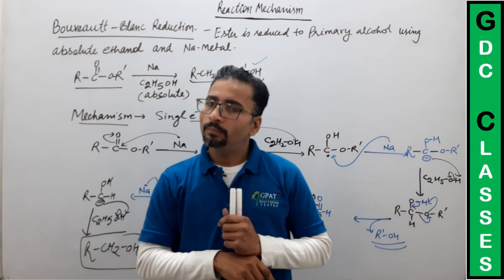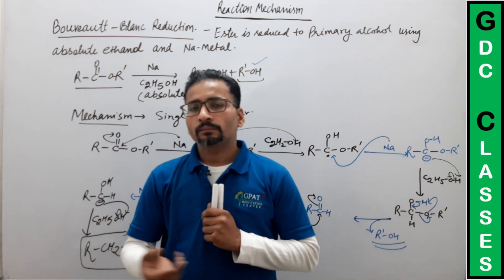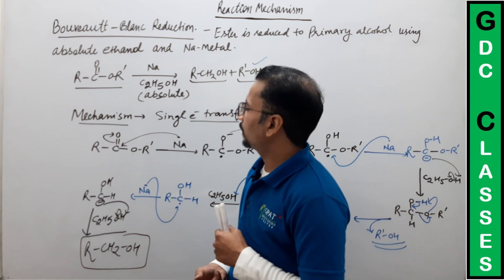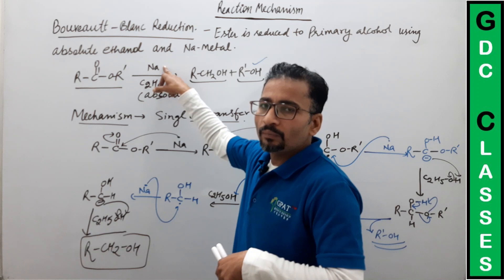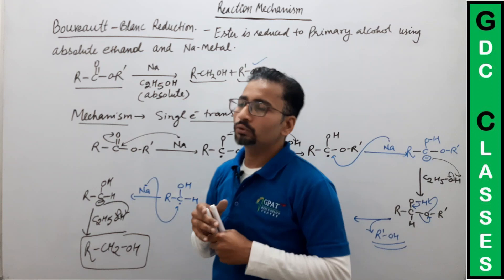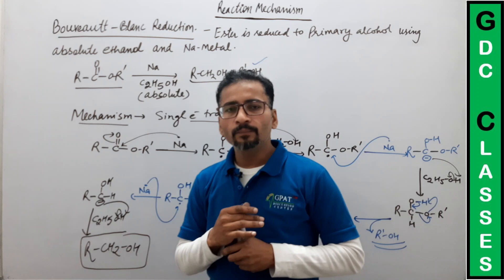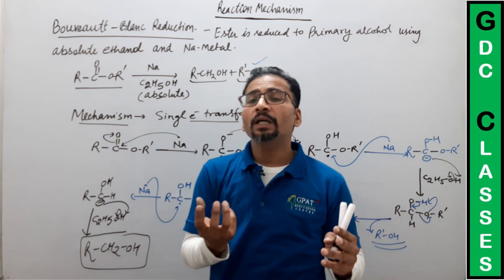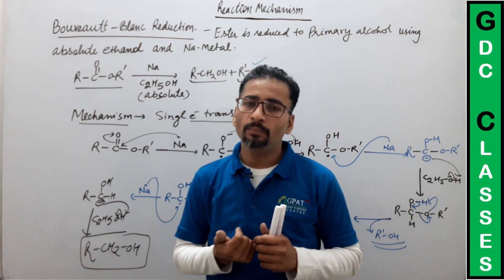Application part में: Bouveault-Blanc reduction का newer version यह है कि sodium को silica gel के साथ लिया जाता है, जिससे reaction थोड़ी fast हो जाती है और safe भी रहती है। Absolute alcohol ही use होता है। यह reaction important है to prepare two different alcohols, and even to prepare one kind of alcohol in more amount।